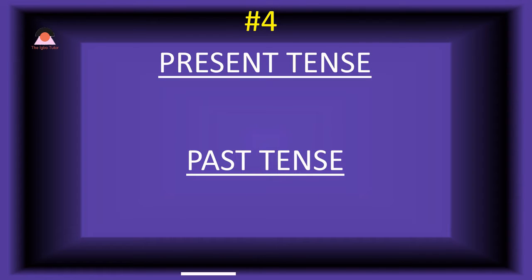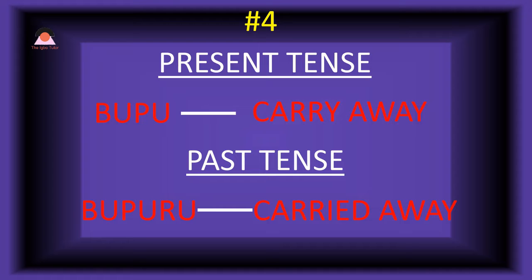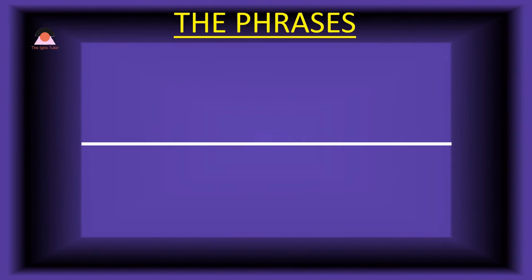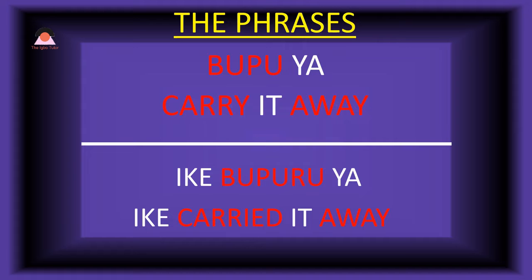Word number four. Present tense: 'bupu,' which means 'carry away.' And the past tense is 'bupuru,' meaning 'carried away.' Present tense phrase: 'bupuya,' which means 'carry it away.' Past tense: 'ike bupuruya' — Ike carried it away.